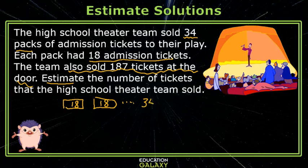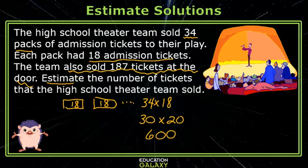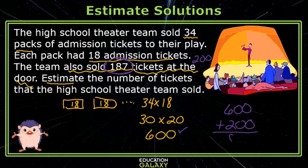I have 34 packs, each with 18 tickets, so I could multiply. But instead of saying 34 times 18, I'm going to round and think 30 times 20. Well, 3 times 2 is 6, so this would be 600 tickets. They also sold tickets at the door, and since my estimated answer so far is rounded to the hundreds, I'm going to round the 187 to 200. So they sold 600 tickets in advance plus another 200 tickets, so the estimated answer is 800 tickets.